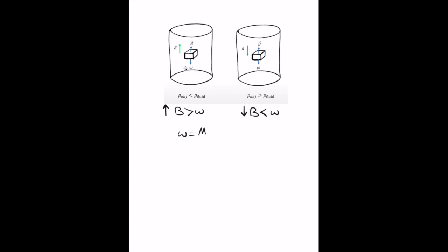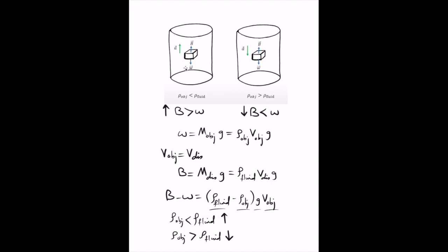In terms of density, the weight of the object is equal to the density of the object times the volume of the object times G. For a wholly immersed object, the volume of the object is equal to the volume of the displaced fluid. The buoyant force is equal to the density of the fluid times the volume of the displaced fluid times G. The net force is equal to the density of the fluid minus the density of the object times G times the volume of the object. The object will float upwards if its density is less than the fluid, and it will sink downwards if its density is greater than the fluid.